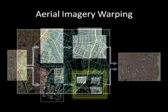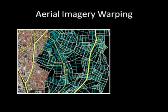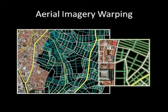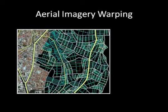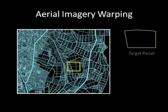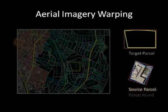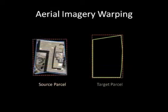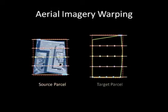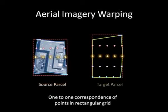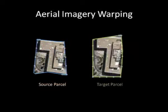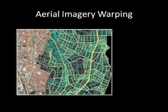As a last step, images for the new parcels are synthesized using the imagery of the example fragments. For each new or target parcel, we search for the most similar source parcel in the example fragment. Then we generate a grid of points inside both parcels and use it to establish a one-to-one correspondence, which at display time is used to warp the source parcel to the target parcel.